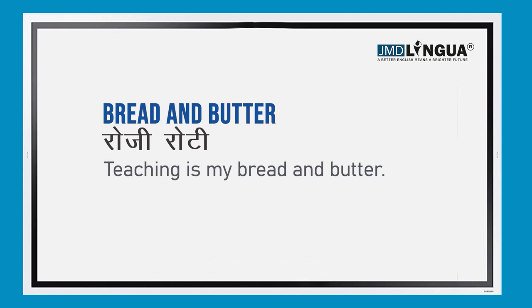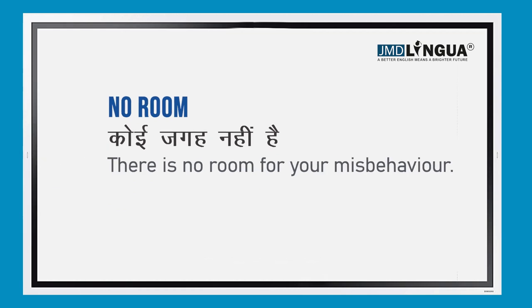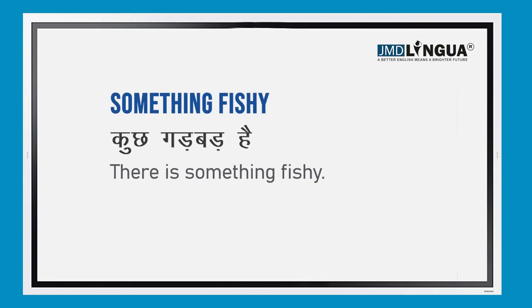The next vocab is 'no room'. The meaning of no room is koi jaga nahi hai. For example: there is no room for your misbehavior. The next vocab is 'something fishy'. The meaning of something fishy is kuch garbada hai.